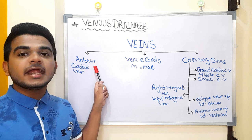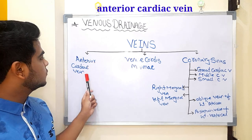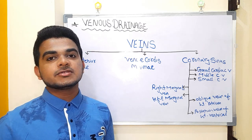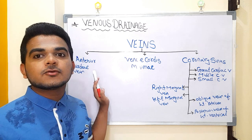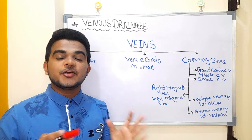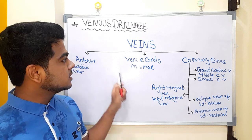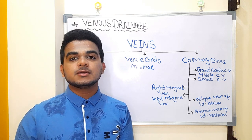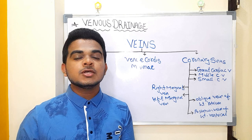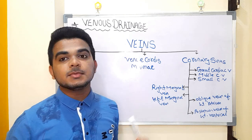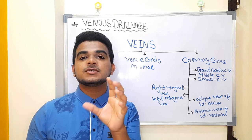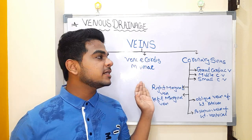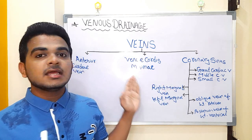The first major vein is the anterior cardiac vein, which is present on the anterior surface of the right atrium. It collects venous drainage and directly drains into the right atrium. The second is the vena cordis minimi — it is a small pore-like structure. If you remember the interior of the right atrium from the previous video, the vena cordis minimi is that small pore-like structure which directly opens into the right atrium.